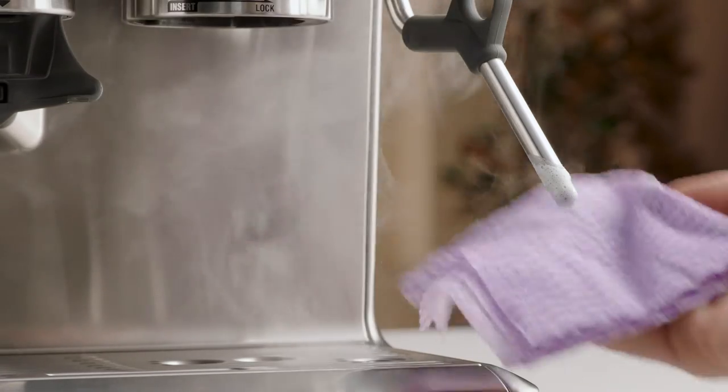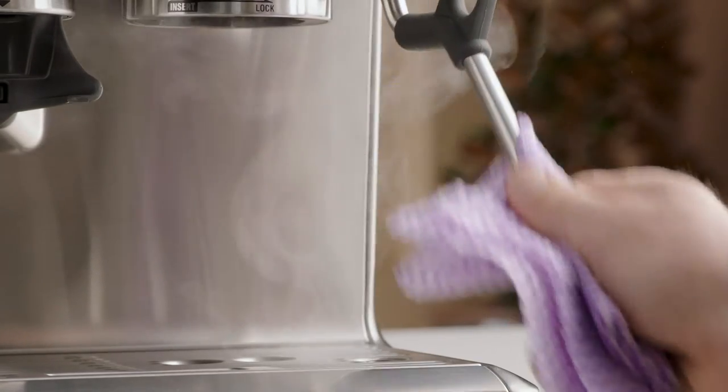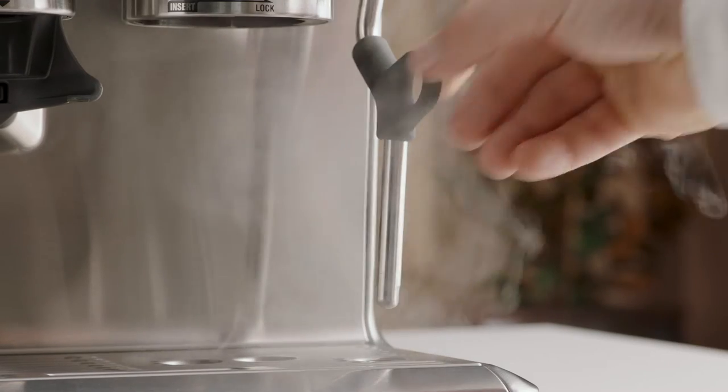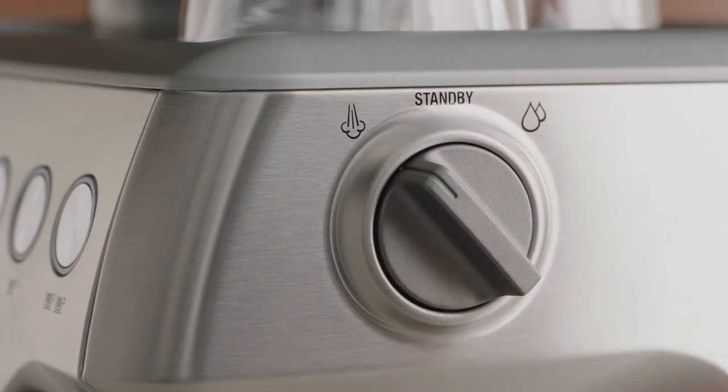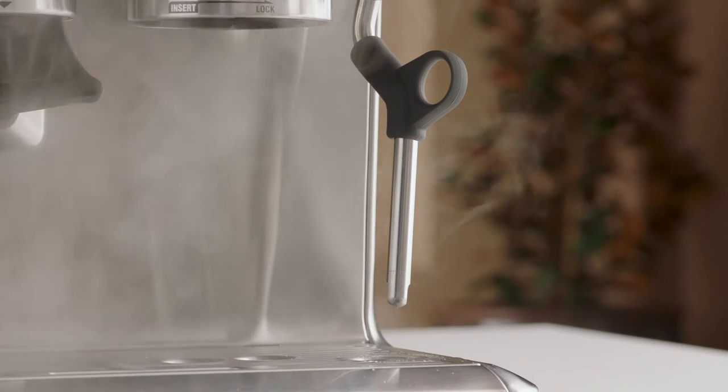To clean the steam wand after use, wipe it down thoroughly with a damp cloth. Direct the steam wand back over the drip tray and set the steam dial to the steam position for a few seconds. This will clear any remaining milk inside the wand.